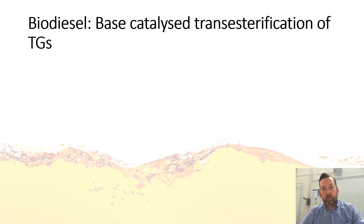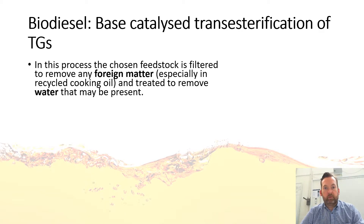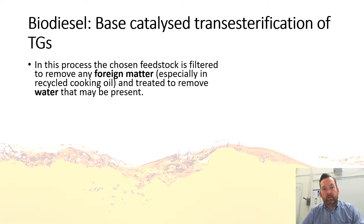The predominant method of production is this base-catalyzed transesterification. In this process, the chosen feedstock — whatever it might be — is filtered to remove any foreign matter. Say we're using waste cooking oil: there might be bits of old chips, dirt, grime, or chunks of food. Anything like that needs to be taken out. It's then treated to remove any water, because water will interfere with the process.